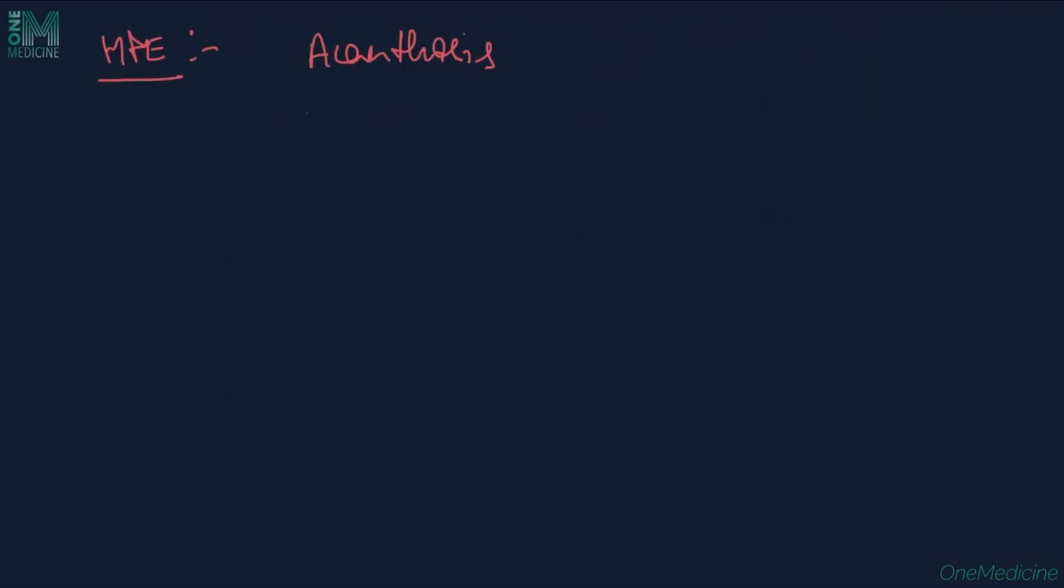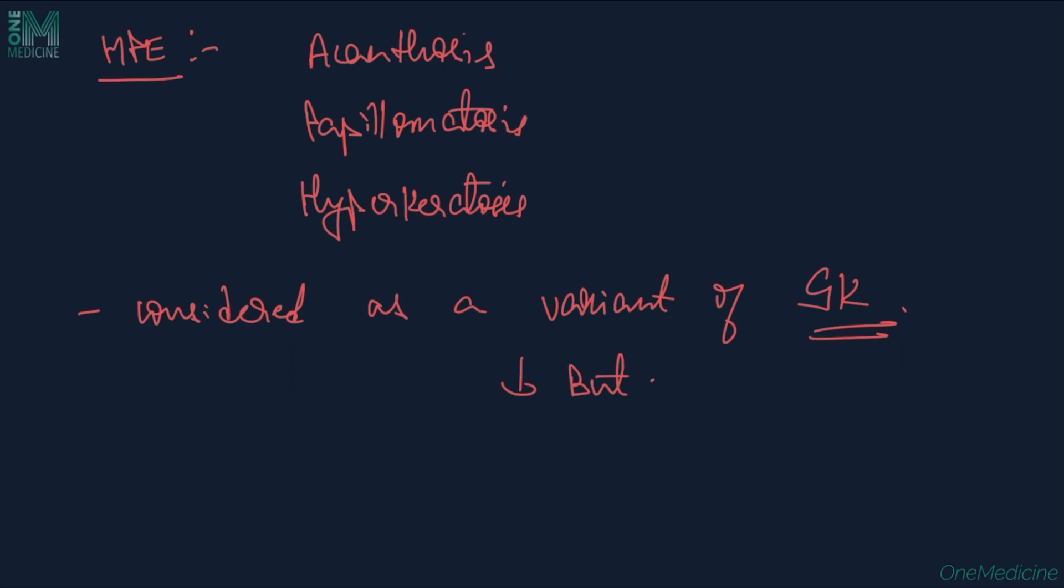Histologically, DPNs show acanthosis, papillomatosis, and hyperkeratosis. These DPNs are considered as a variant of seborrheic keratosis. However, in contrast to seborrheic keratosis, horn pseudocysts are usually absent.